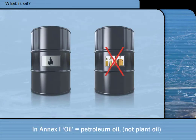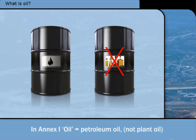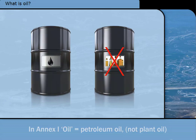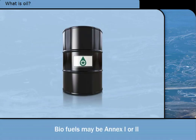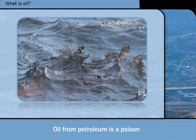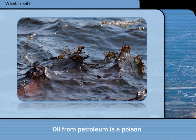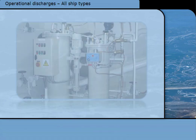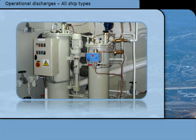Annex 1 of MARPOL defines oil as oil coming from petroleum, not plants. Plant oils are considered as Annex 2 chemicals. Biofuels made from blends of petroleum and plant oils may come under Annex 1 or 2 depending on the blend. When oil from petroleum gets in the sea, it causes harm by acting as a poison, physically damaging life by coating it or blocking the sunlight.